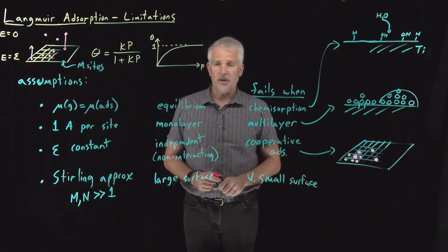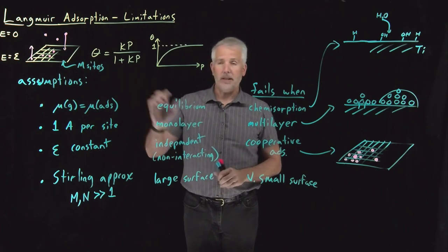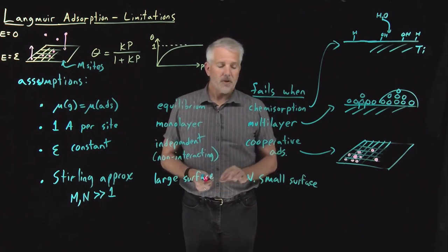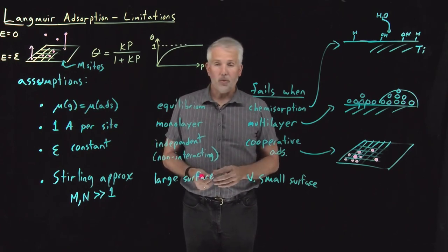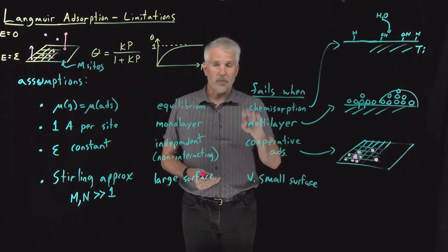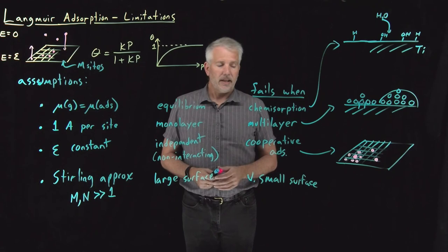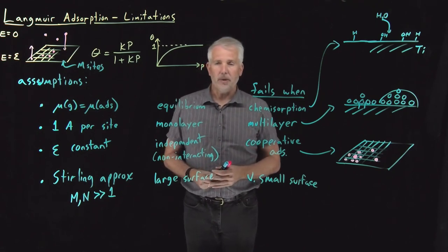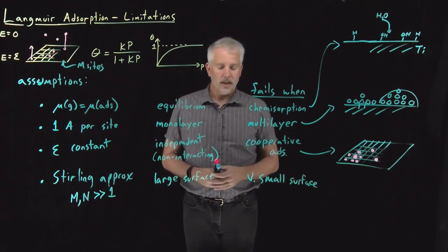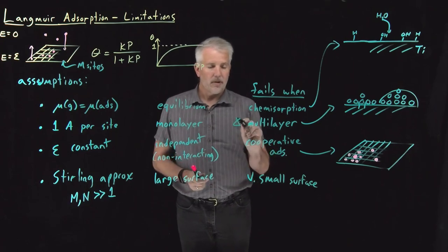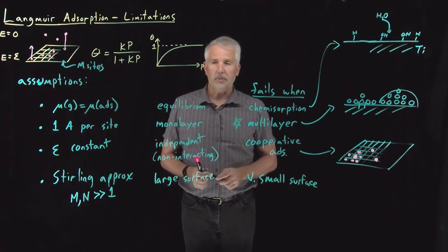So in fact, a large number of adsorption cases don't obey the Langmuir isotherm model. So the next question is, what would we do if we have a situation where we wouldn't expect the system to obey the Langmuir model, and we can solve some of these problems and develop a more accurate model that will help us understand adsorption in particular for the case where we have multilayer adsorption. So we'll talk about that one next.